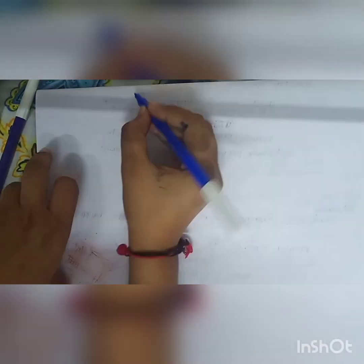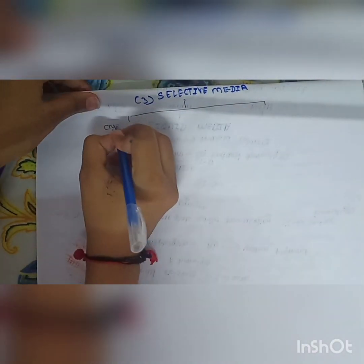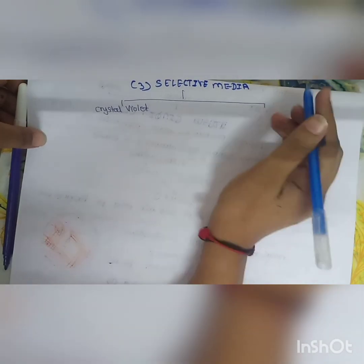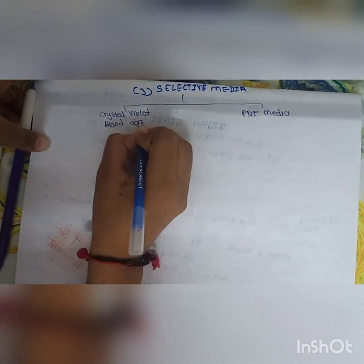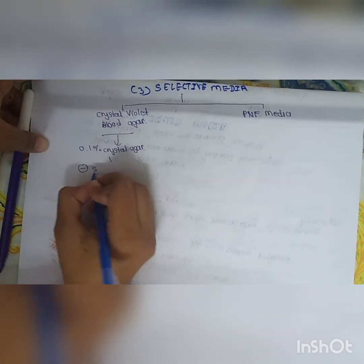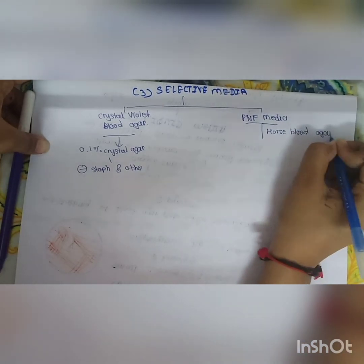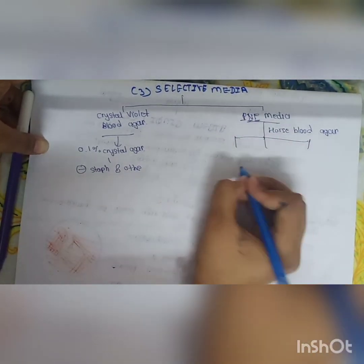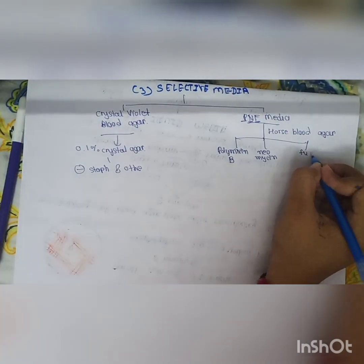The third culture medium is selective media, which suppress common organisms and allow pathogens to grow. For S. pyogenes, two selective media are mainly used: crystal violet blood culture medium, which includes 0.1% crystal violet to decrease growth of staphylococcus and other bacteria while allowing strep to grow; and PNF medium, which is horse blood agar mixed with polymyxin B, neomycin, and fusidic acid.